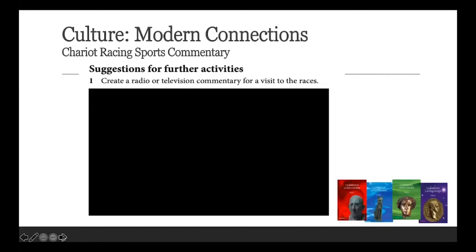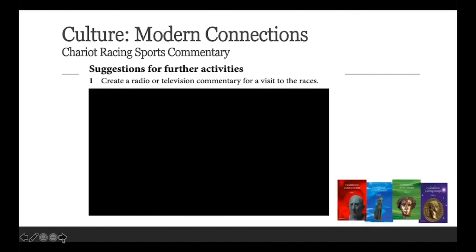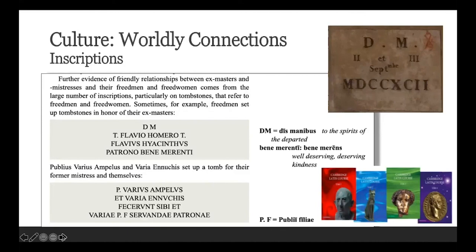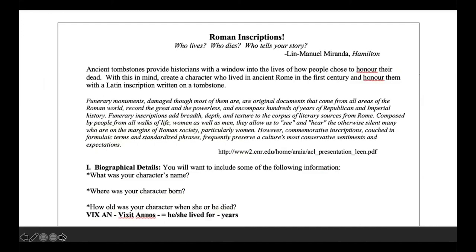You can show clips from Ben-Hur and have students create a radio or television commentary for a visit to the races — a suggestion straight out of the teacher's manual. Students practice: 'Ruber, ruber, go for the red team!' And the worldly connections — inscriptions. When my students head off to Vienna, I do a lot of inscription work ahead of time. We look at them in museums, and every one of my kids knows that Dis manibus means 'to the spirits of the underworld.' They make their own inscriptions and we display them all over the school — kids read them and want to know what Roman texting was like. That's it.